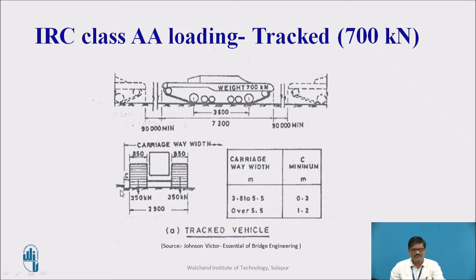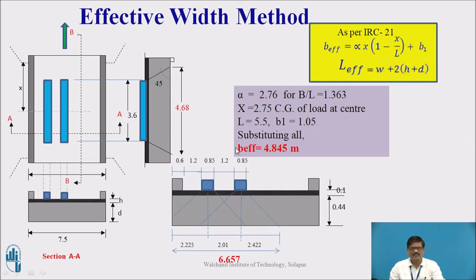From the edge of the curb, a minimum distance C is to be provided. This minimum distance depends upon the carriageway width. For a carriageway width of 3.81 to 5.5 meters, it is 0.3, and over 5.5 meters, this distance is 1.2 meter. With this understanding, now let us begin with our problem.